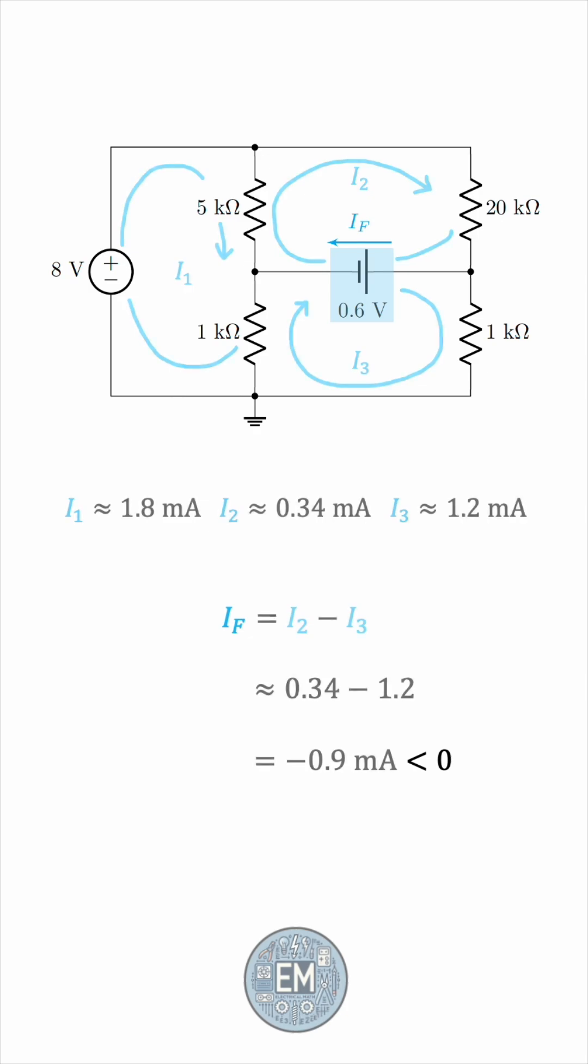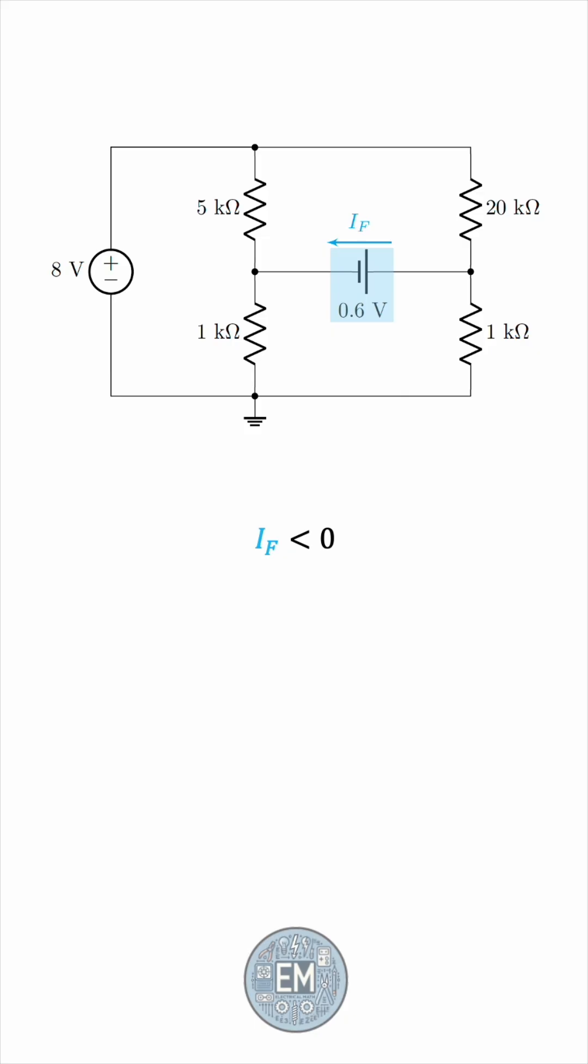What matters here is that this is a negative quantity. So, since IF is negative, we can see that the diode is not forward biased. It's actually reverse biased, because if it were conducting, then IF would be positive, because we chose the labeled direction to be in agreement with a conducting diode.